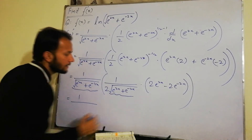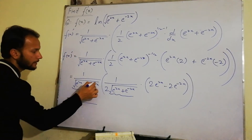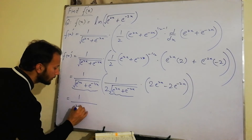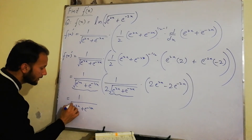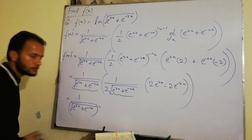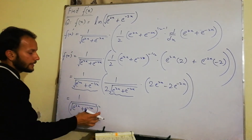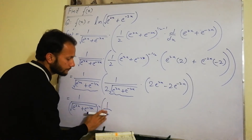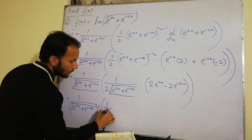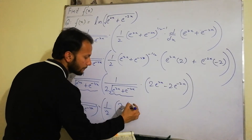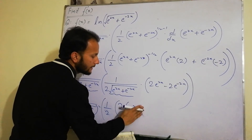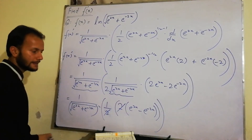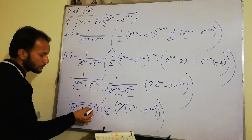Since the bases are the same, we find e to the power 2x plus e to the power minus 2x under root. The under-root and the square cancel out. Taking 2 as a common factor, we get 2 into (e to the power 2x minus e to the power minus 2x). The terms cancel out and we find the remaining result.